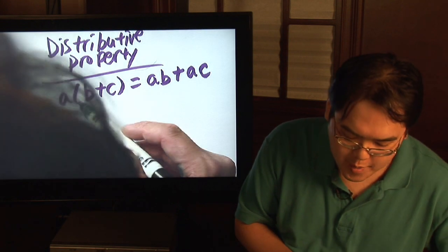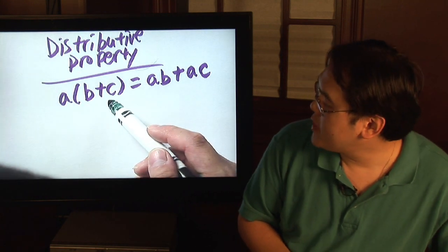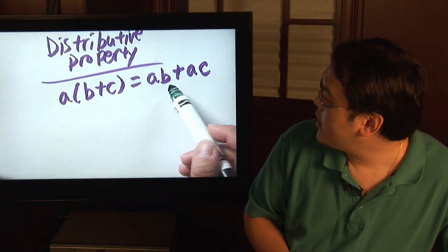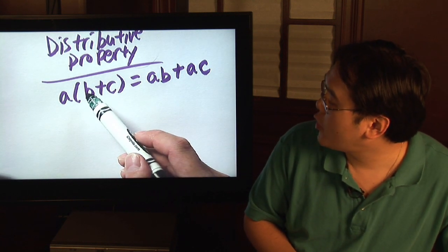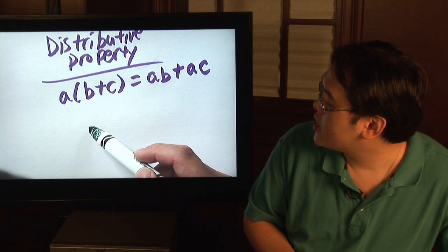So the distributive property says a times b plus c is equal to ab plus ac. Now what that means is it combines multiplication with the operation of addition.